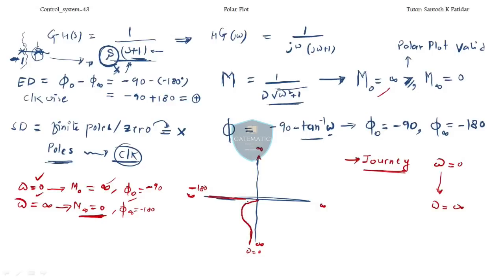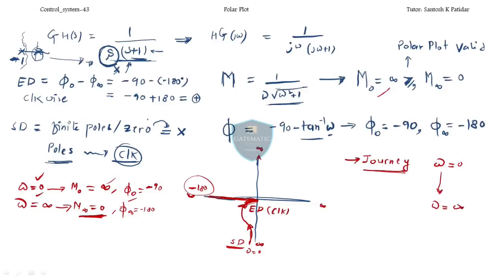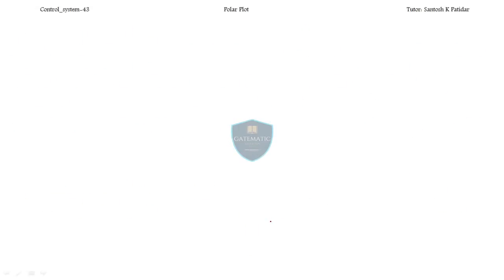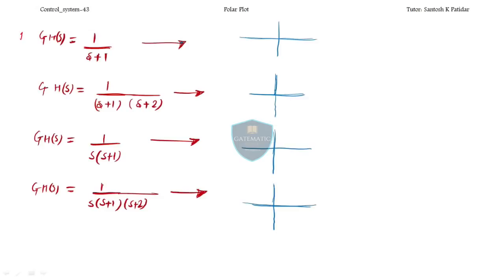The ending means just parallel to the axis — your plot and the negative real axis will be parallel at the ending point. Starting direction is clockwise and ending direction is also clockwise. So both are clockwise, and this is your polar plot graph.